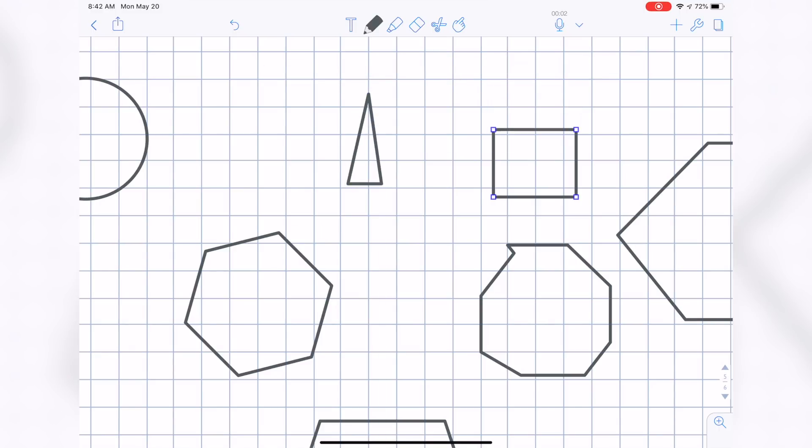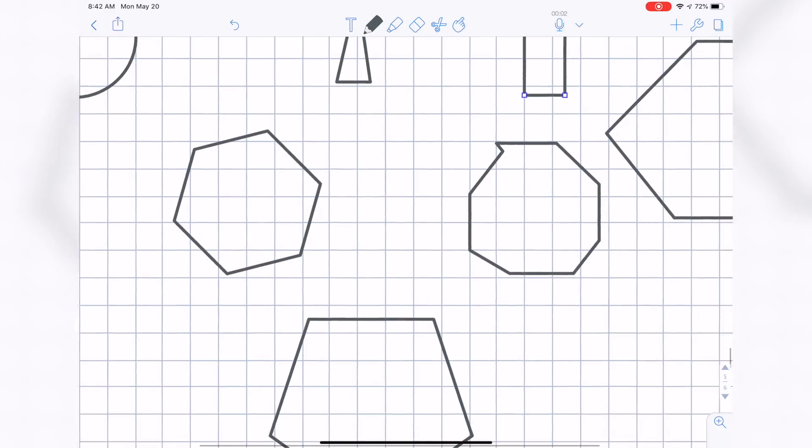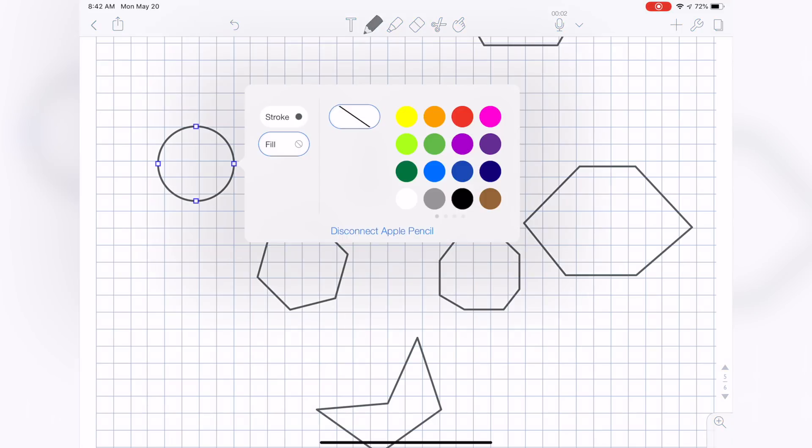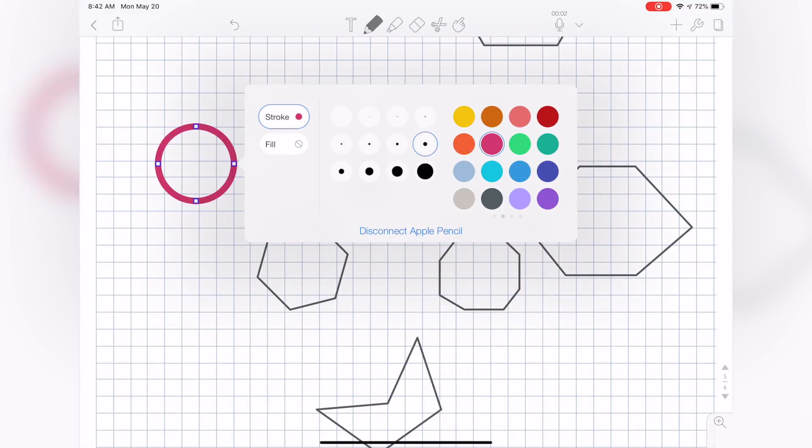I can turn this rectangle into a square, make it longer or taller. I can make any of these shapes more abstract, I can make it into a bit of a Pac-Man, or do whatever I want. I can still easily change the stroke, make it whatever color I want, and adjust the thickness.